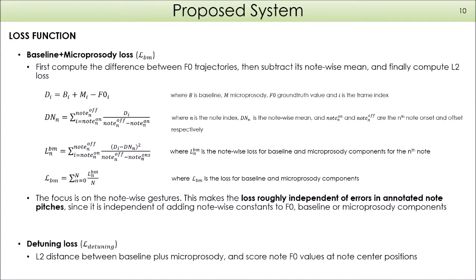For computing the baseline plus microprosody loss, we first segment the predicted and ground truth F0 curves into notes. Then for each note, we subtract the mean and compute the L2 loss. This way, we put the focus on note-wise gestures and make the loss roughly independent of errors in annotated note pitches. What we get is a loss that is independent of constants added to F0, baseline, or microprosody components. On the other hand, the detuning loss is the L2 distance between note F0 values and the value of baseline plus microprosody at note center positions.